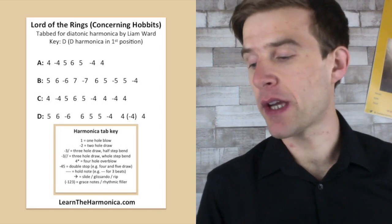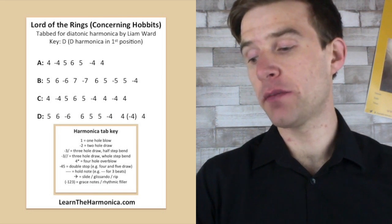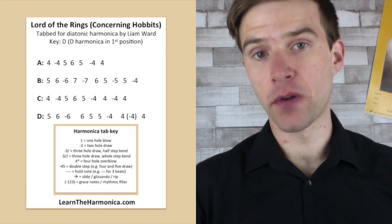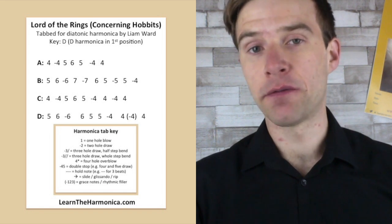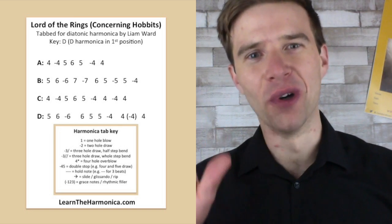Now there's a note in bracket, so we're going to talk about that at the end, but I'll just give you the tab including that note for now. So we've got five blow, six blow, six draw, and then six blow, five blow, five blow, four draw, and then five blow, four draw, four blow. Sorry, four blow, four draw, four blow.